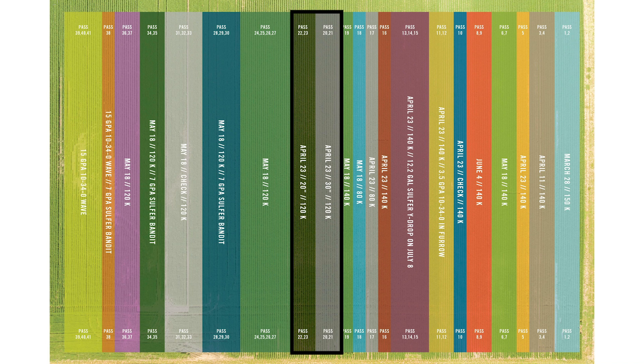The next thing we want to discuss is spacing. Within this plot we are comparing 20 inch rows and 30 inch rows. The main advantage we've seen with 20 inch rows so far in the season is an increased canopy, which allows for better water utilization and decreased weed pressure. And within 30 inch rows, the increase in airflow and sunlight allows for less white mold pressure.